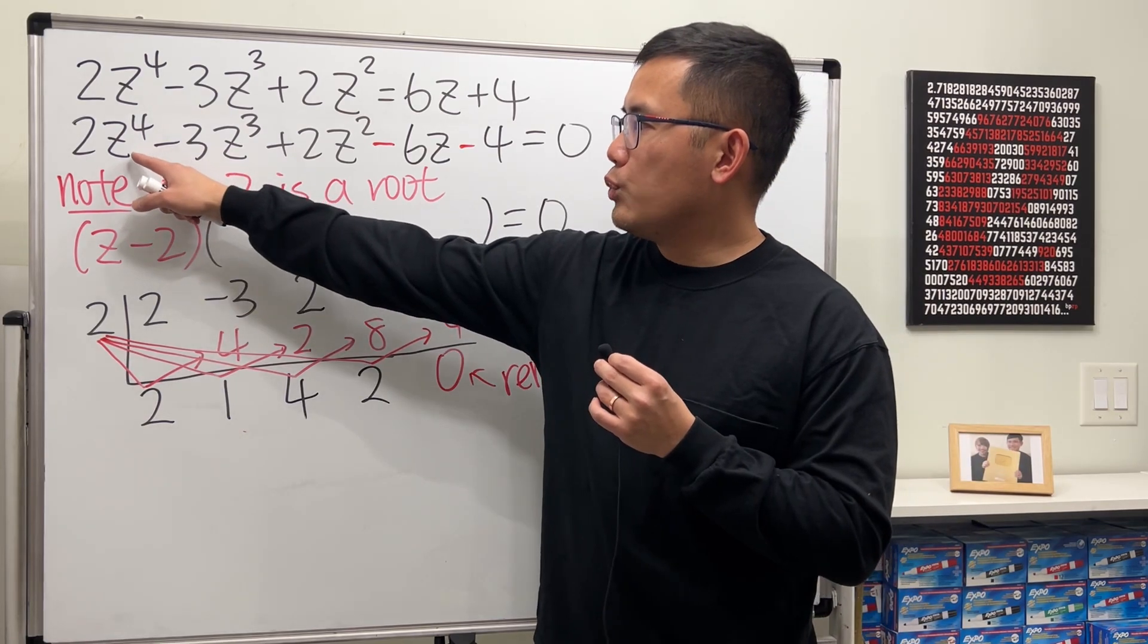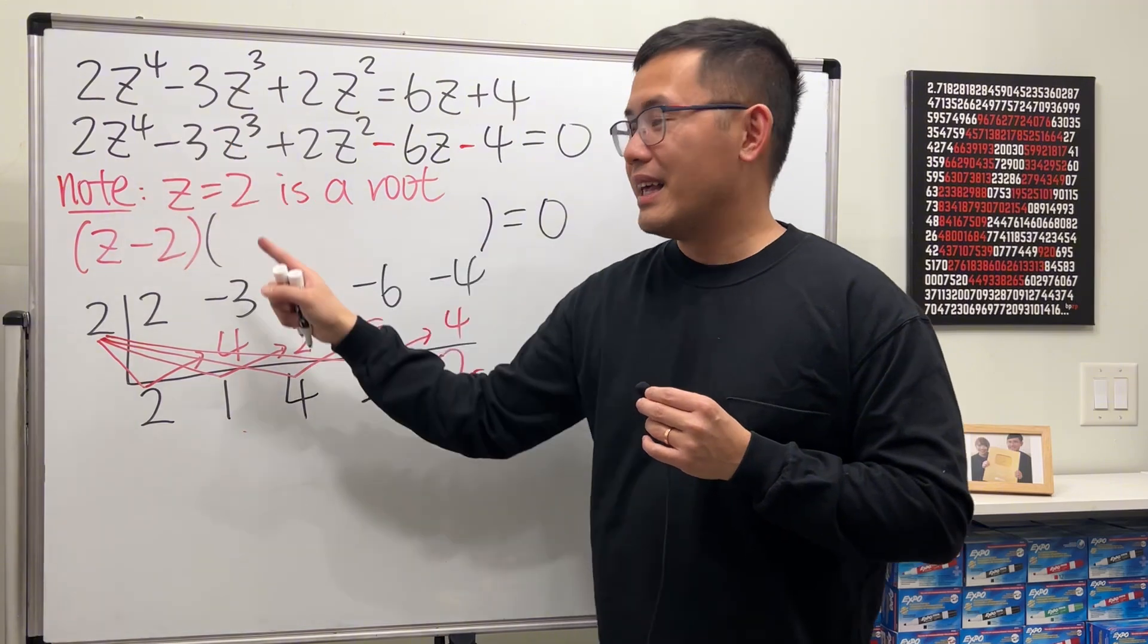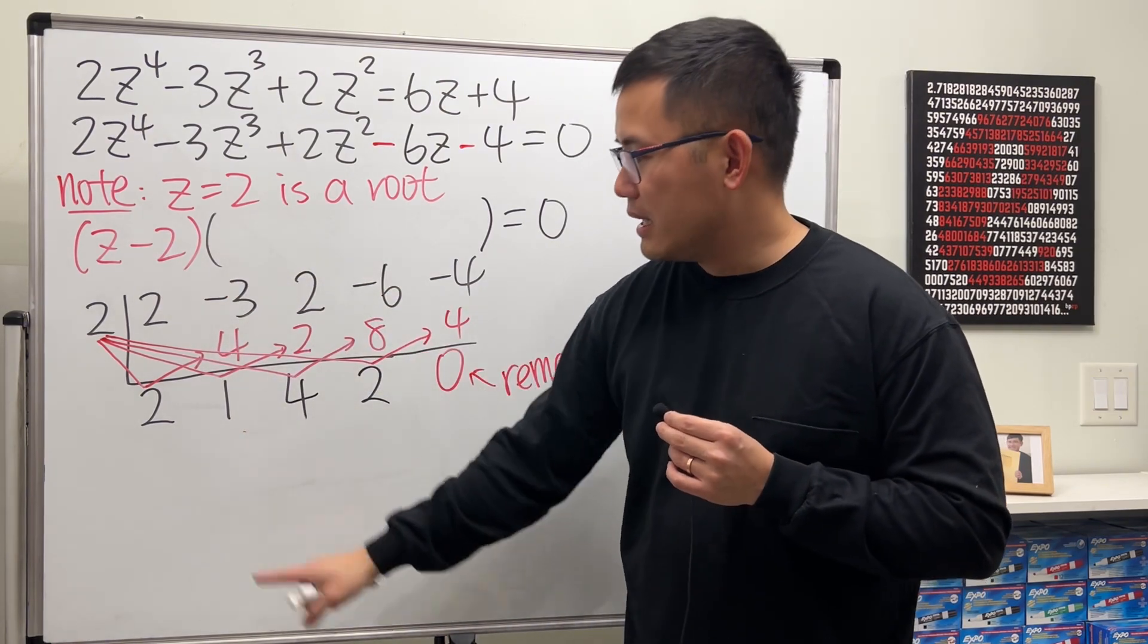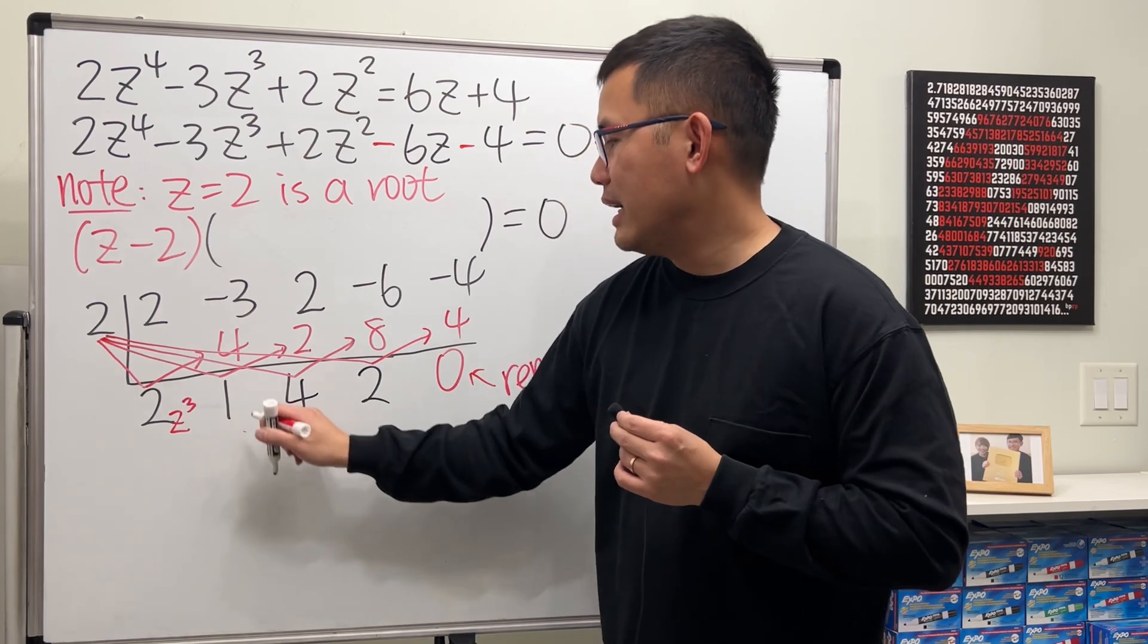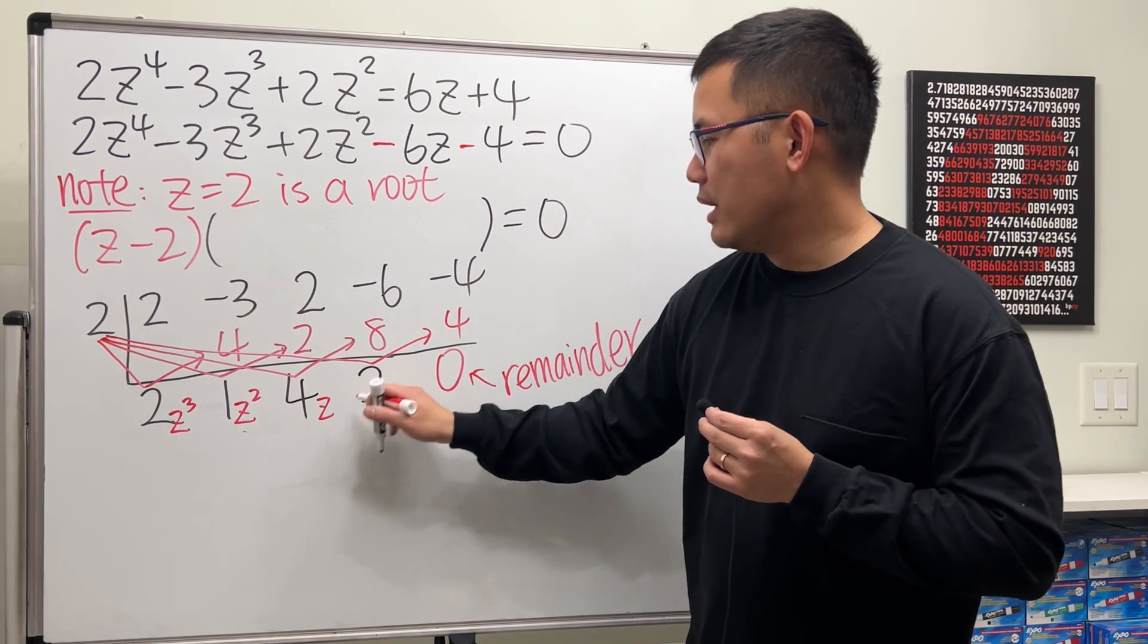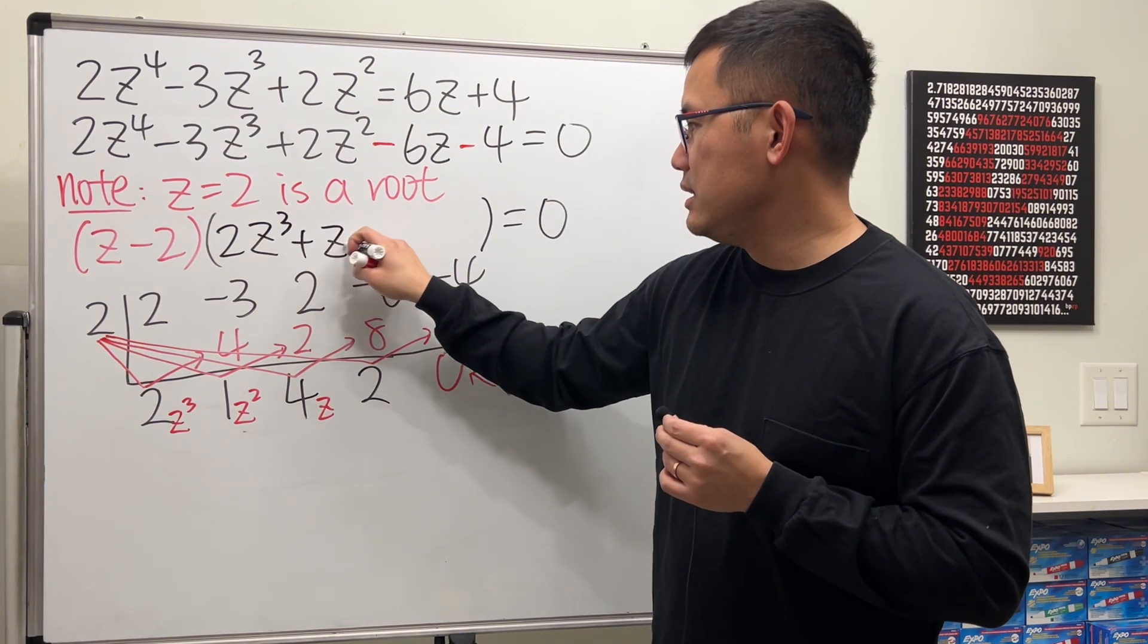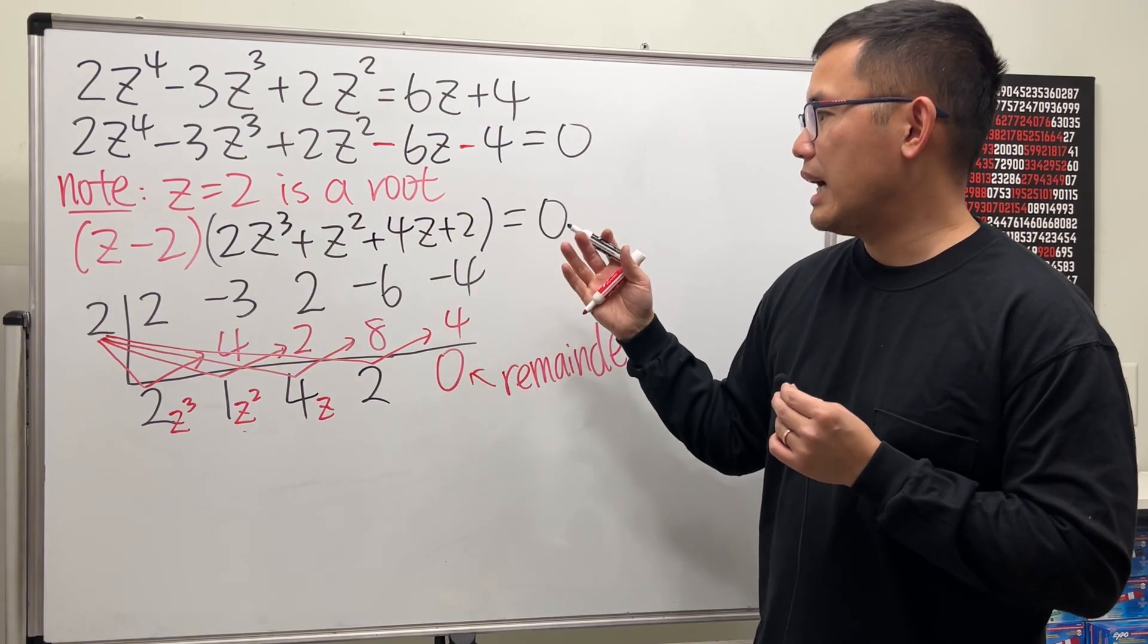If you know this polynomial has this as a factor, then the remainder should always be 0. And this right here will give you the coefficient of the polynomial side. Remember, originally it was z to the fourth power. Here it becomes the cubic, because you divide it by z to the first. So the power goes down by 1. So this is 2z³, and then this is 1z², and this is 4z to the first power, and this is just a constant term, which we have 2z³ + z² + 4z + 2.